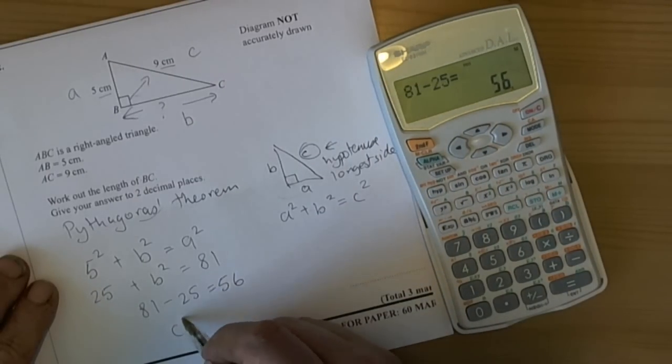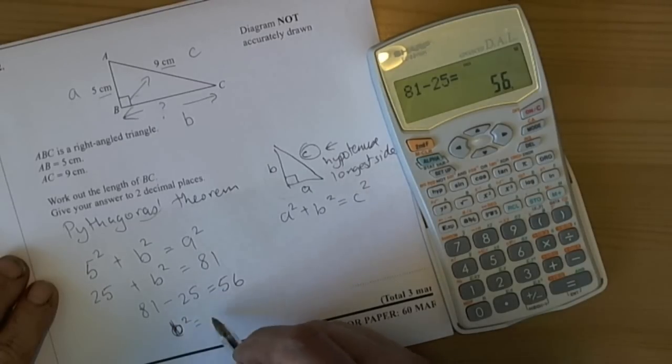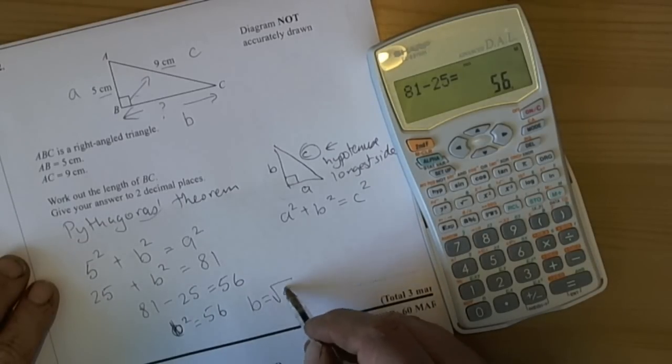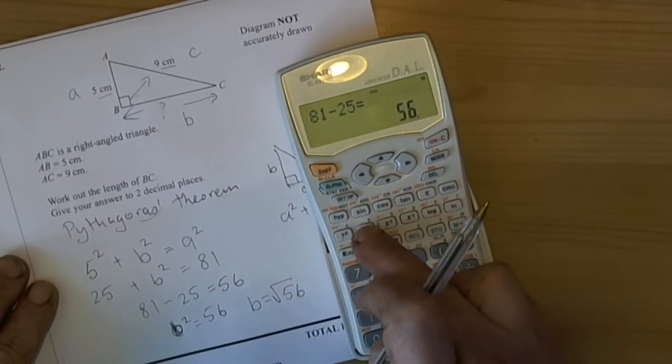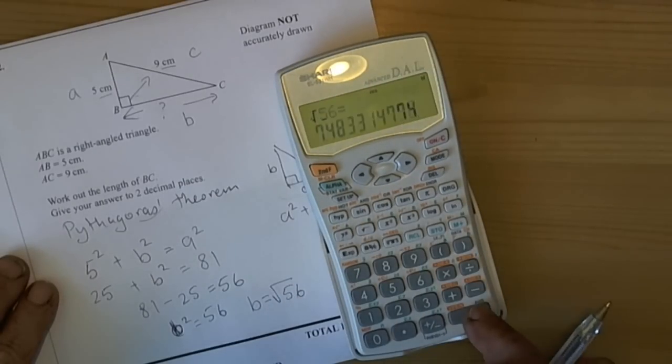So that is the value of B squared. So B squared is equal to 56. Now the last thing you always do on Pythagoras is that once you know the area of the square or the length of the side squared is a number, we finish off by doing the opposite of squaring which is square rooting. So B is equal to the square root of 56. So on our calculators square root 56 equals.